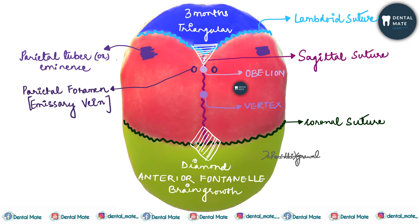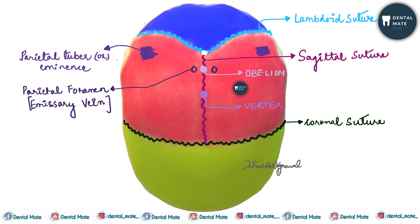After closure of the posterior fontanelle, that point becomes lambda. After closure of the anterior fontanelle, the point is known as bregma. Bregma is the meeting point between the coronal and sagittal sutures; lambda is the meeting point between the lambdoid and sagittal sutures. The point on the sagittal suture just medial to the parietal foramen is obelion, and the highest point on the sagittal suture is the vertex.